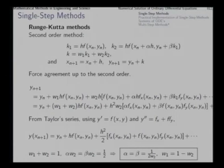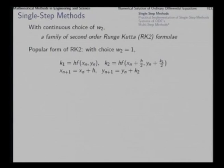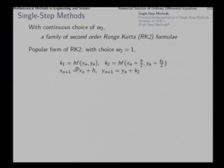Depending on which value of w₂ we select, we get slightly varying second-order Runge-Kutta methods — it is a family of methods. If we take w₂ = ½, then α and β will turn out to be 1, giving what we just now discussed — the improved Euler's method. On the other hand, the popular choice of second-order Runge-Kutta method is w₂ = 1, meaning we use the Euler step only as a stepping stone to find the midpoint, evaluate the function there for K₂, and take the actual step equal to K₂ alone with w₁ = 0. This is the second-order Runge-Kutta midpoint method.